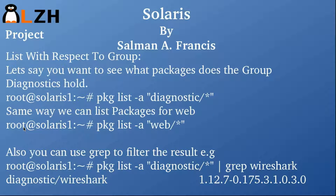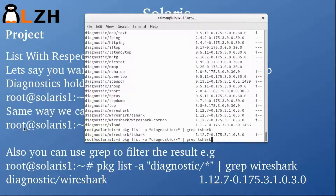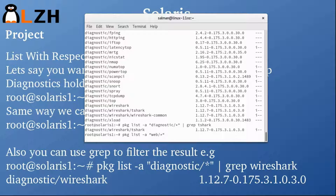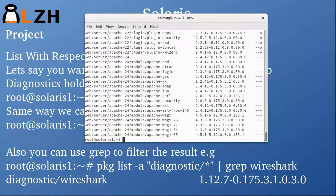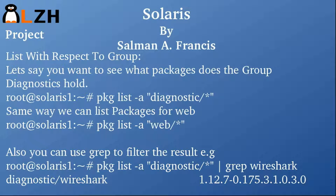The same approach works for the web group. Running 'pkg list -a web/*' lists everything in the web group. If you want to search for Apache specifically, you can grep for 'apache' and it will appear in the results.